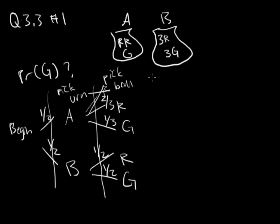Now we have our sample space, which you have urn A red, urn A green, urn B red, and urn B green.